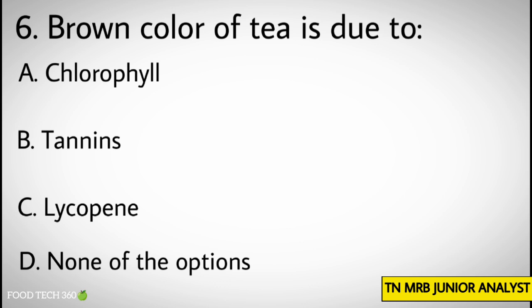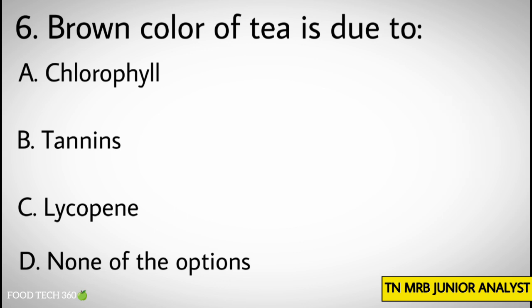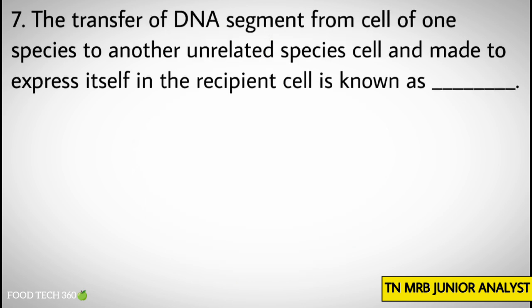...C) Lycopene, D) None of the options. Correct answer: B) Tannins. Question number seven: The transfer of a DNA segment from the cell of one species to another unrelated species' cell, made to express itself in the recipient cell, is known as dash. Options: A) G-DNA technology...